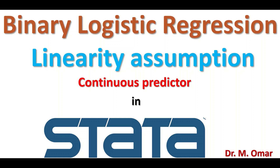One variable is the outcome and the other is the predictor. For binary logistic regression, the outcome has to be binary or binomial, such as alive or dead, or male or female. The predictor can be continuous, categorical, or ordinal.